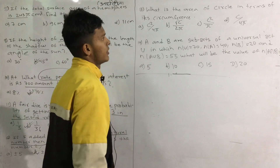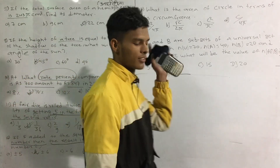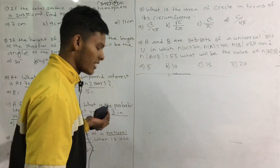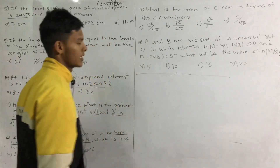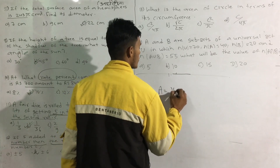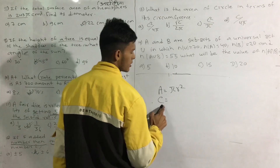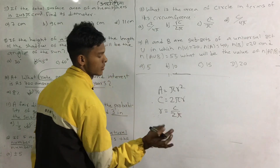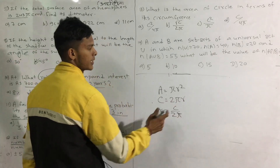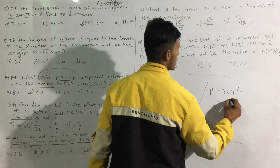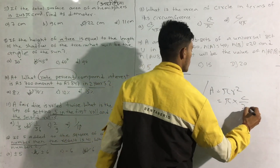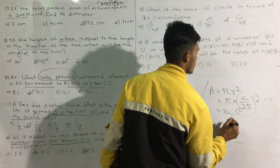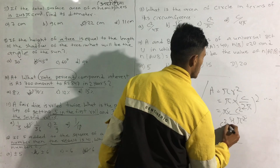What is the area of a circle in terms of circumference? The area of a circle is pi r squared. We need to express r from circumference C: circumference C equals 2 pi r, so r equals C divided by 2 pi. Substituting: area equals pi times (C / 2pi) squared, which gives C squared by 4 pi.